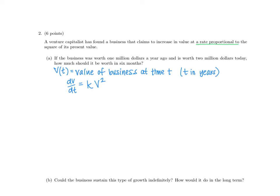We're also told the business was worth $1 million a year ago and $2 million today — that information will help us find K. This isn't a simple situation where we're given a specific rate of change at a specific value; we can't just plug in and solve for K directly. But we notice this is a separable differential equation. As long as V is not zero — and the company's value is not zero — we can use separable differential equations to solve this.